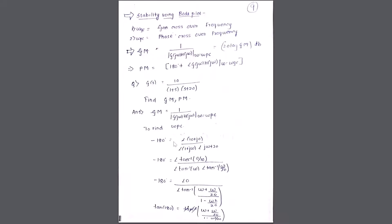The formula is: tan⁻¹(A) + tan⁻¹(B) = tan⁻¹((A + B) / (1 − AB)). Here, tan⁻¹(ω) plays the role of tan⁻¹(A) and tan⁻¹(ω/20) plays the role of tan⁻¹(B). Please note this formula down and apply it to the current equation.